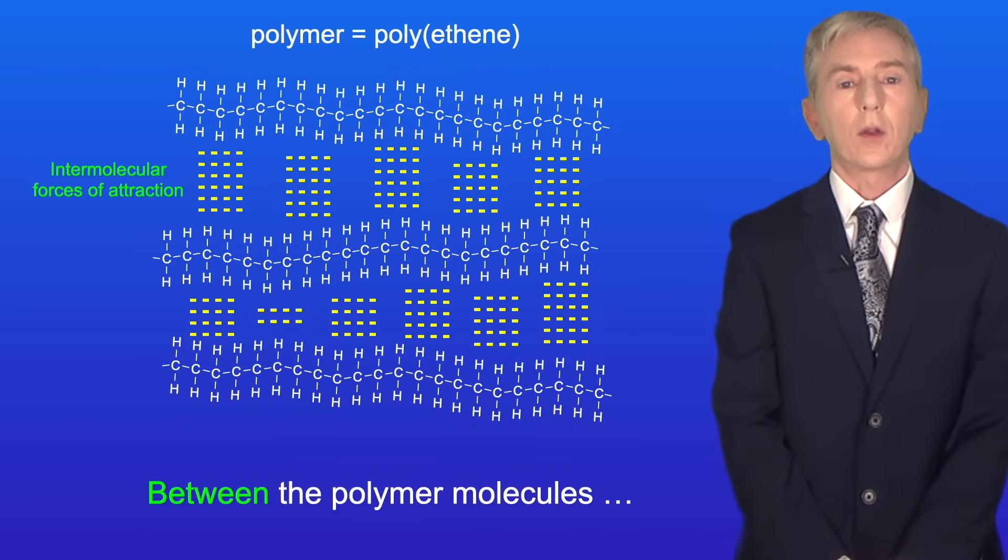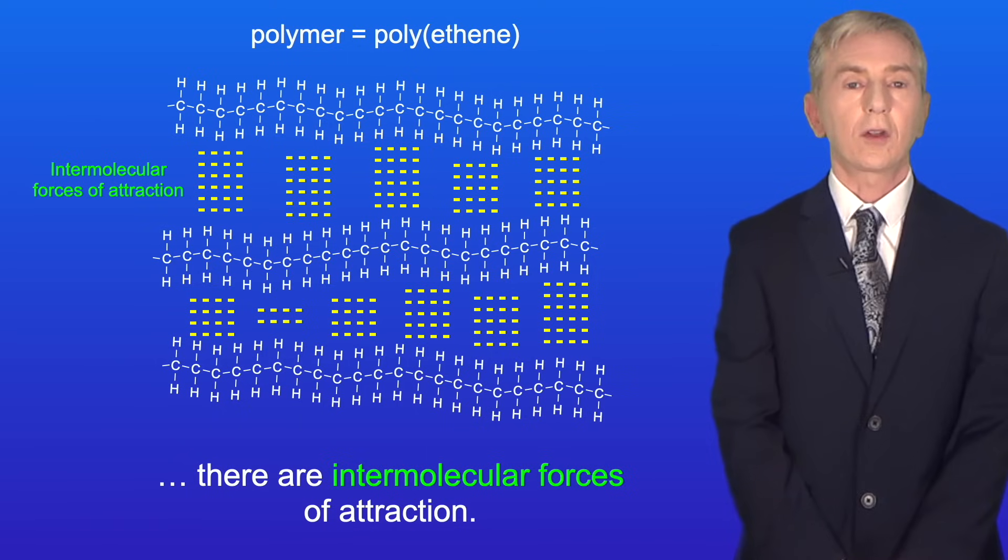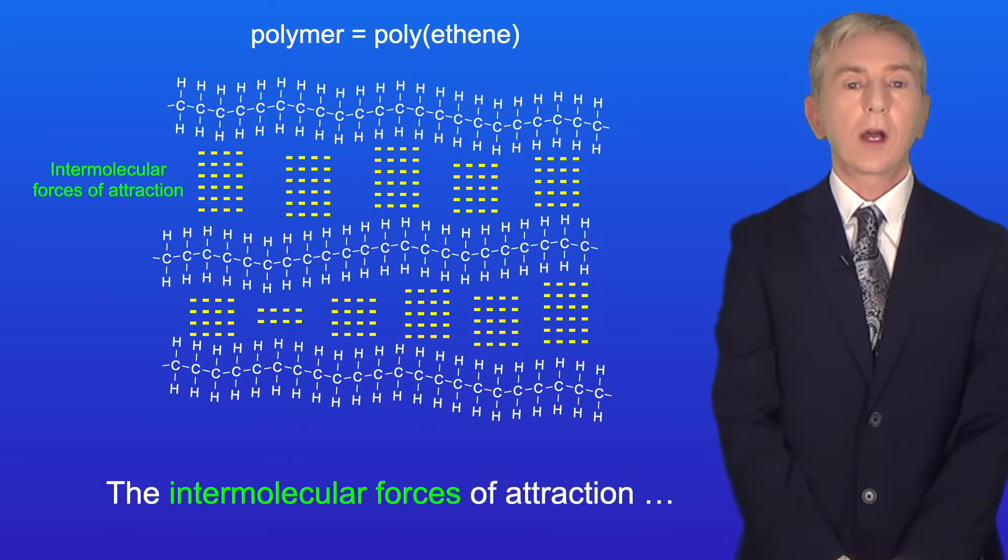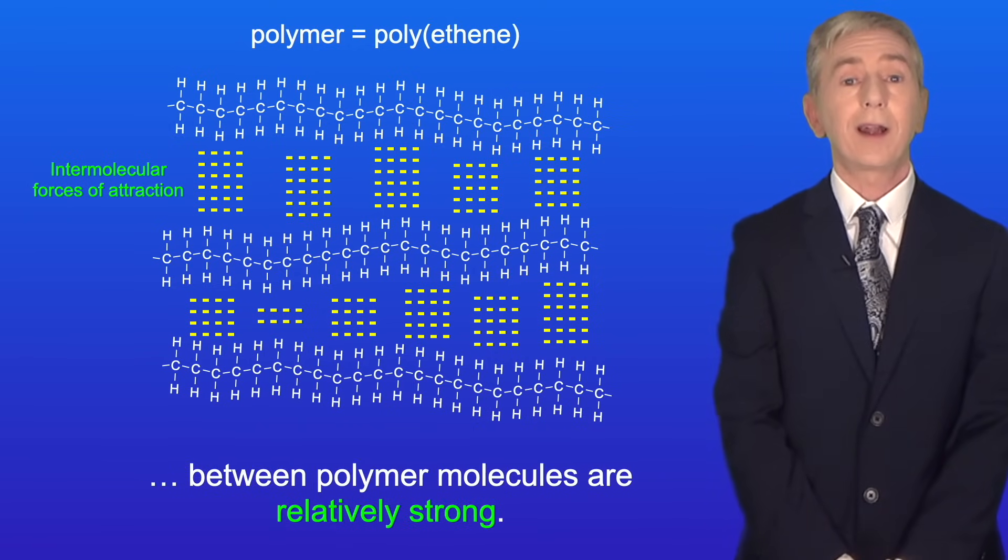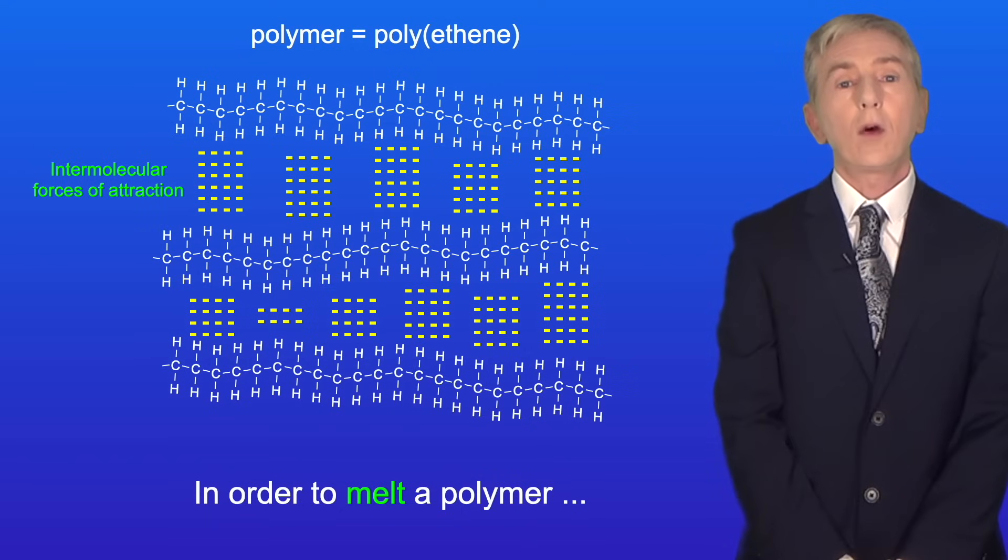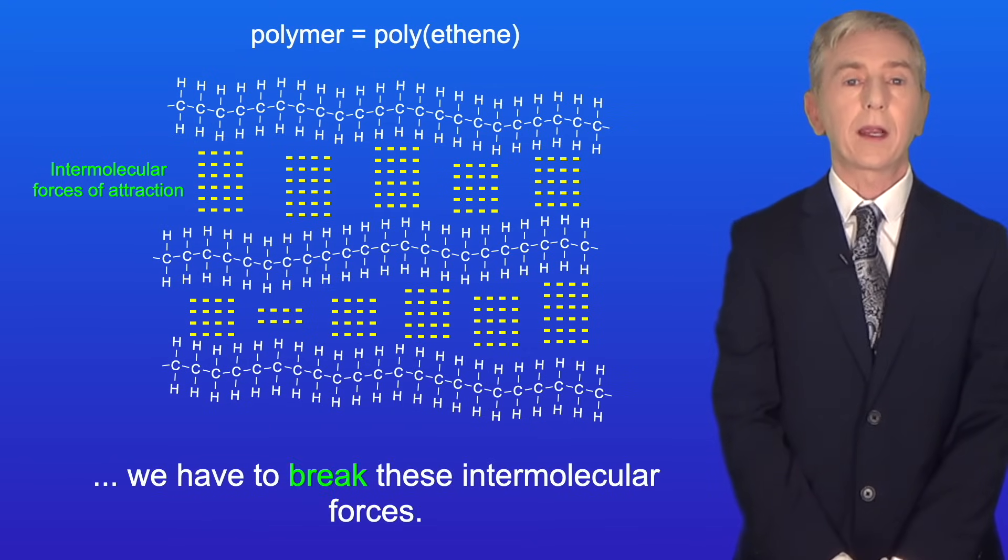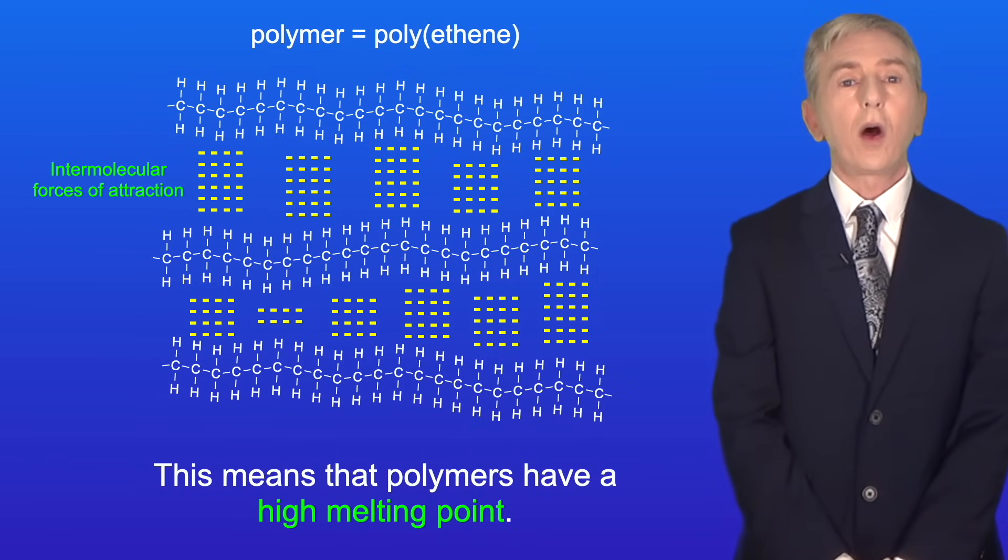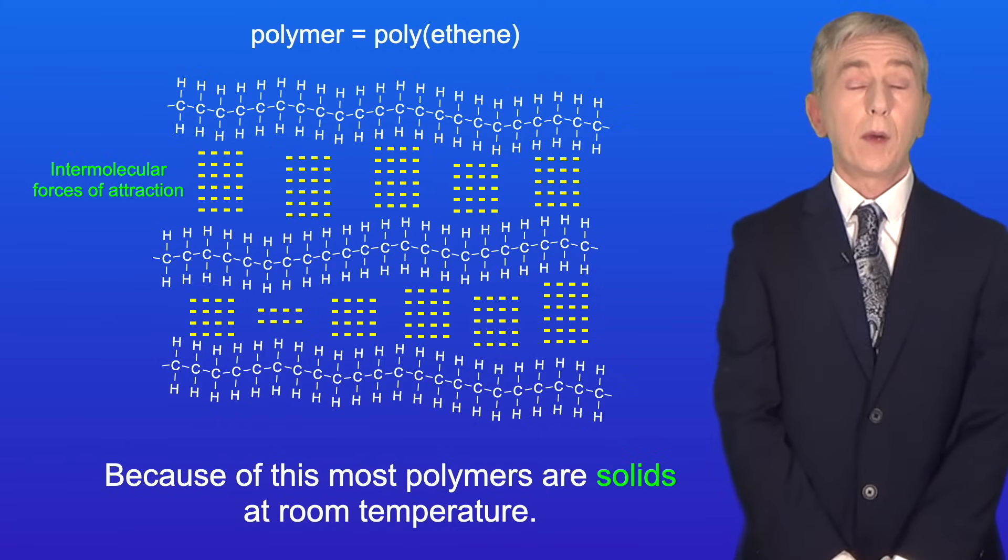Between the polymer molecules there are intermolecular forces of attraction and the word intermolecular means acting between molecules. Now the intermolecular forces of attraction between polymer molecules are relatively strong. In order to melt a polymer we have to break these intermolecular forces. Breaking the intermolecular forces takes a lot of energy and this means that polymers have a high melting point and because of this most polymers are solids at room temperature.